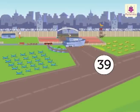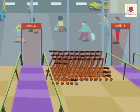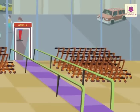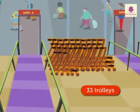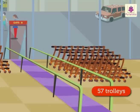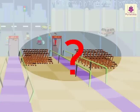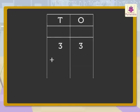Look, we found the answer. Now let us look at one more addition story at the airport and try to solve it. Can you see those trolleys at gate A and gate B at the airport? There are 33 trolleys at gate A and 57 trolleys at gate B at the airport. How many trolleys are there in all? We have to add 33 and 57 to find the total number of trolleys.